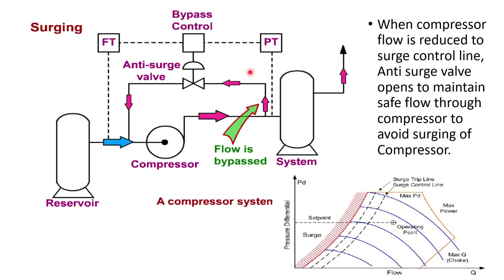The anti-surge valve diverts gas from the compressor discharge back to the compressor suction, increasing the flow through the compressor and protecting it from surge. Both pressure and temperature are measured to operate this control valve appropriately.